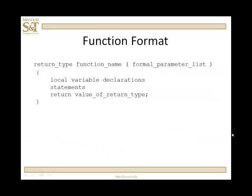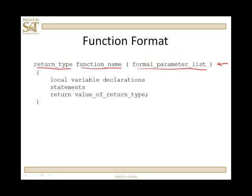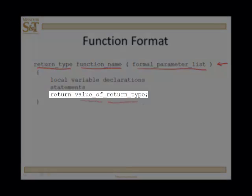Let's start by looking at the format of a function. This first line is what we call the function header. I always think of a function header as having three things: a return type, a function name, and a formal parameter list. The formal parameter list can be empty, meaning you send nothing to the function. The parameters are variables declared local to the function and they're going to be instantiated with values you pass to the function. The return type is the type of value returned or sent back to the calling function.